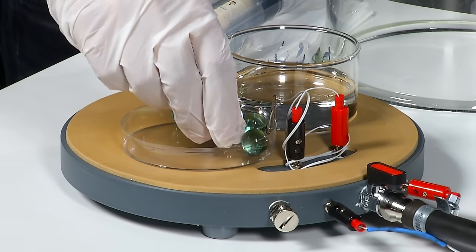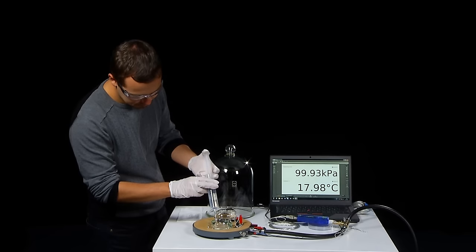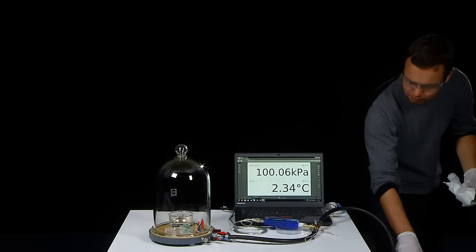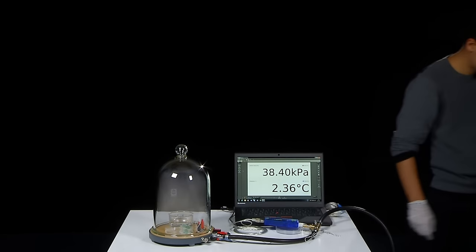In a second run of the experiment we also place a small beaker with sulfuric acid in the chamber. The acid attracts water molecules from the gas phase and helps to improve the vacuum.